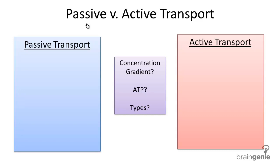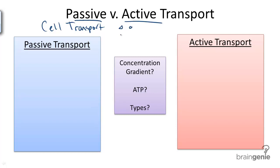Passive versus active transport — what's the difference? Passive and active transport are two types of cell transport. Cell transport is any way in which we get molecules — glucose, salts, water — across a semi-permeable membrane, such as the phospholipid bilayer that surrounds all cells.